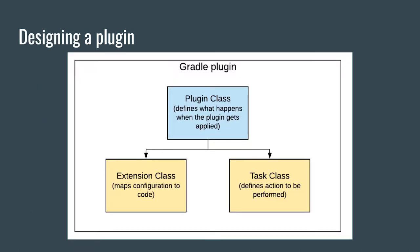So how do we go about designing a plugin in terms of what classes are required? The main class is the plugin class, which defines what happens when the plugin gets applied, and it makes use of a few other types. The extension class is a way of configuring your plugin — the configuration in the build.gradle maps to the extension class. The task class is used by the plugin to create a task instance associated with a name, like 'file diff', so users can run ./gradlew file diff.